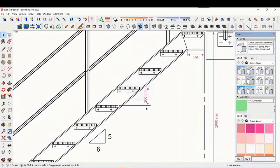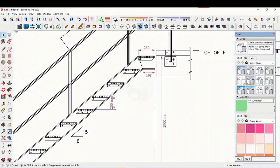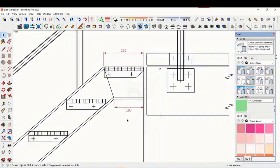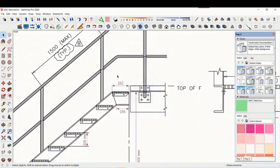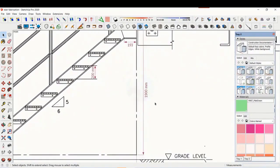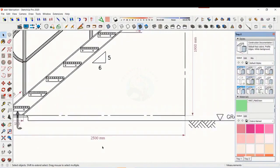The basic structure is made from ISMC 200. The height of the staircase is 1900 millimeters and the length is 2500 millimeters. The width of the staircase is 750 millimeters.